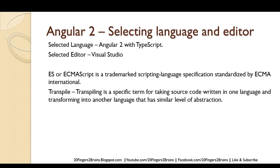These are the definitions of the terms used in this video. ES or ECMAScript is a trademarked scripting language specification standardized by ECMA International. Transpile is a specific term for taking source code written in one language and transforming it into another language that has a similar level of abstraction. So we are done with selecting language and editor — let's move further in our course.